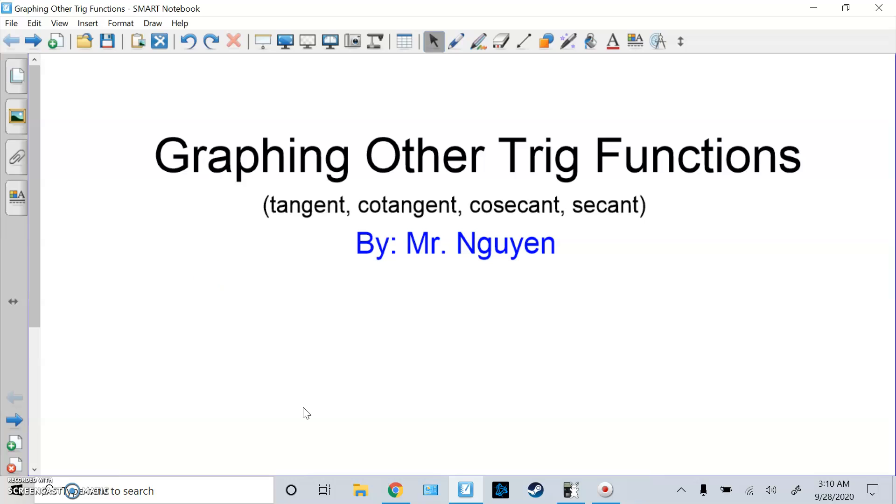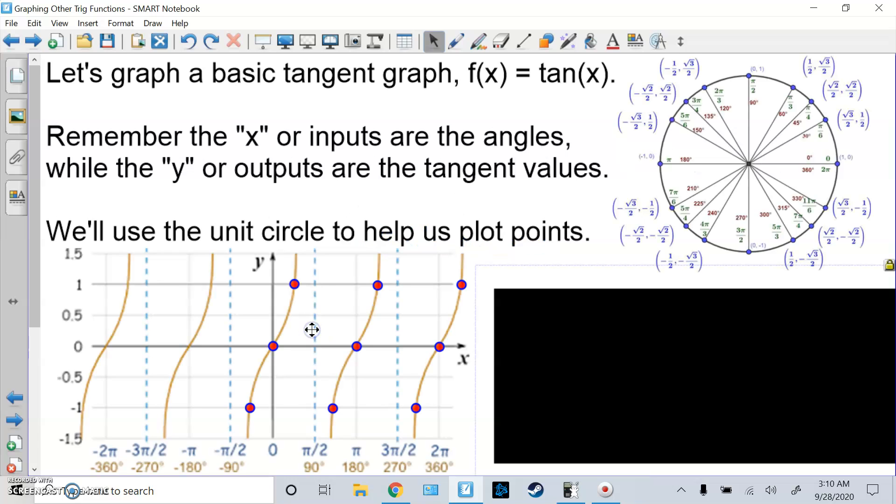Hello, this is Mr. Wynn, and this video is graphing other trig functions. We're going to go over tangent, cotangent, cosecant, and secant. So let's graph a basic tangent graph, f(x) = tan(x). Remember that x are the inputs or the angles, while the y's or outputs are the tangent values. We'll use the unit circle to help us plot points.